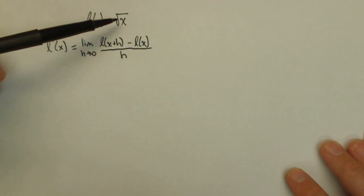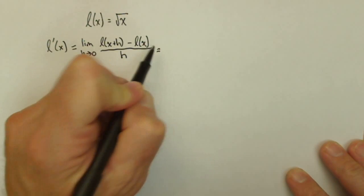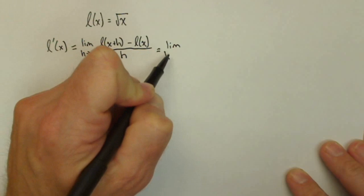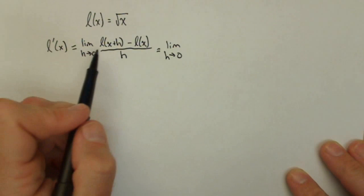So we're going to take the derivative of L of x equals square root of x using the definition of the derivative. So our first step is to set up our definition and see what kind of algebra we can use to help ourselves out.